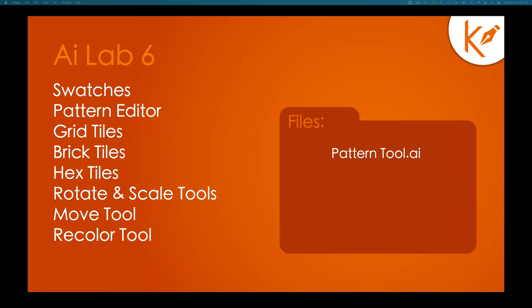Hi class, welcome to Illustrator Lab 6. Today we are going to introduce swatches, explore the pattern editor, grid tiles, brick tiles, and hex tiles. We're also going to review new ways to use the rotate and scale tools as well as the move tool, and we'll introduce you to the recolor tool. The file you're going to need today is called patterntool.ai. When you're ready, go ahead and launch it.